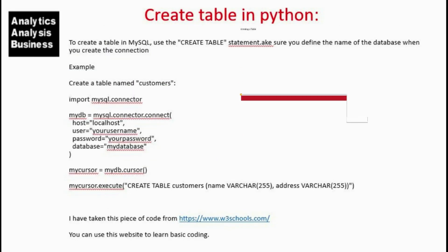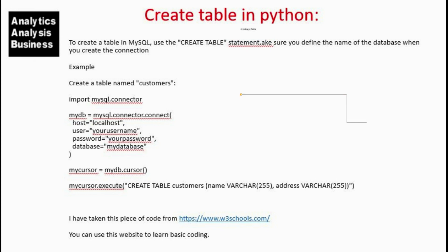Creating a table in Python using MySQL. Use the CREATE TABLE statement, and make sure you define the name of a database when you create the connection. Example — create a table named customers: import mysql.connector; mydb = mysql.connector.connect(host='localhost', user='your_username', password='your_password', database='mydatabase'); mycursor = mydb.cursor(); mycursor.execute('CREATE TABLE customers (name VARCHAR(255), address VARCHAR(255))'); This code is taken from w3schools.com, which you can use to learn basic coding.